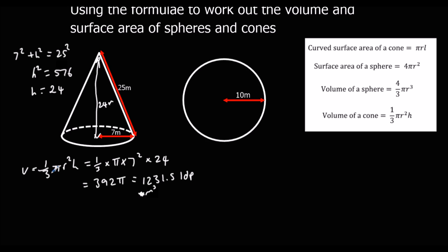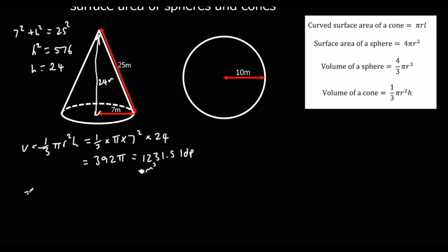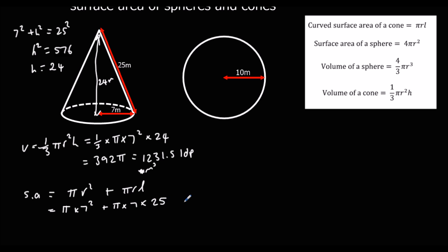For the surface area of the cone: we've got the base, which is pi r squared, plus the curved surface area, which is pi r l. So it's pi times 7 squared plus pi times 7 times 25. That gives 224 pi, or as a decimal 703.7 meters squared to 1dp.